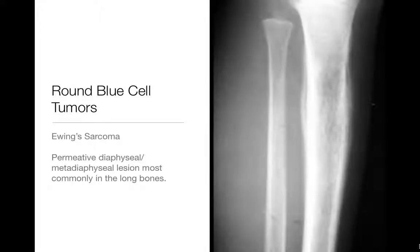Ewing sarcoma is another round blue cell tumor. It's typically located in the diaphysis or the metaphyseal-diaphyseal region. Classically, it's a permeative lesion associated with aggressive periosteal reaction, as we see here. They tend to occur around age 12 or so, though they can occur in younger kids and older young adults as well. It remains hard to differentiate Ewing sarcoma from lymphoma and leukemia radiographically.